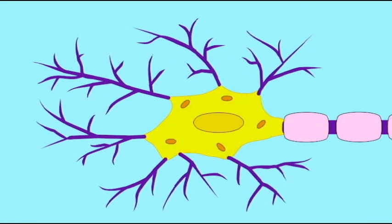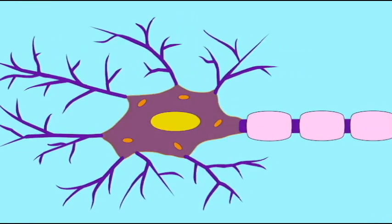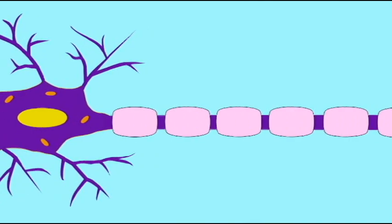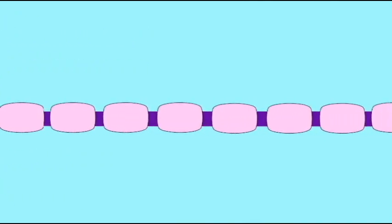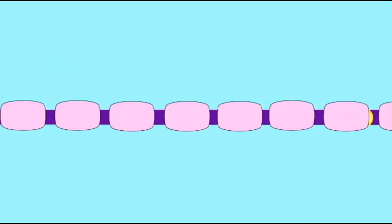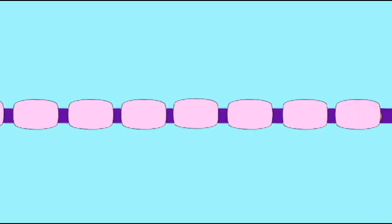Now since lipids don't conduct electricity, this forces the action potential to jump to the sites where these Schwann cells or oligodendrocytes meet, known as the nodes. Therefore, this is a type of conduction known as saltatory conduction.